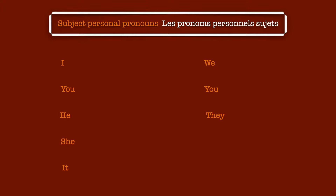First thing first, what we can notice is that there is a difference between English and French, because I wrote the pronoun 'you' twice. This is because there is one for singular and the other for plural. So now, let's see how to write all the different subject personal pronouns.